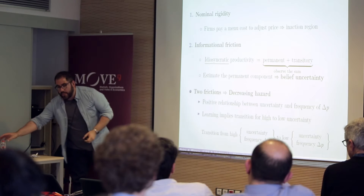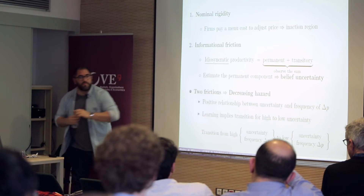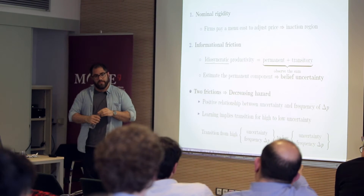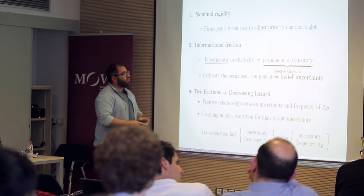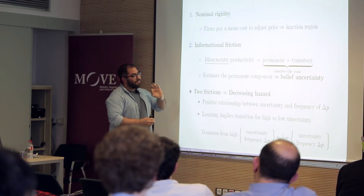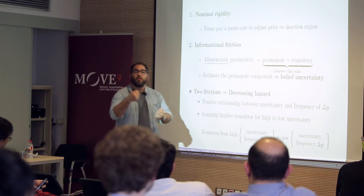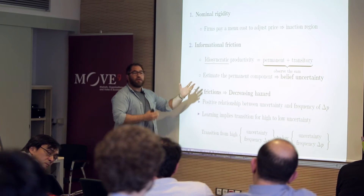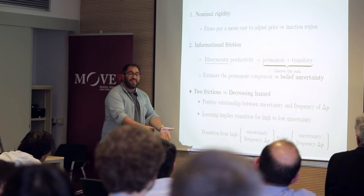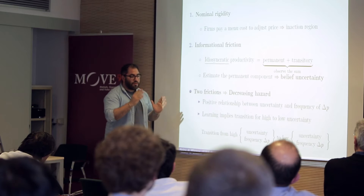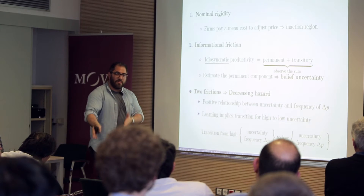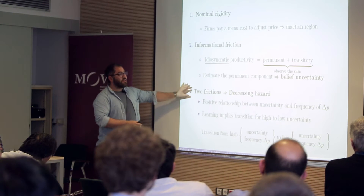A model with demand shocks and uncertainty would give similar results — there's an isomorphism. As you'll see, there are actually quality shocks that affect both productivity and demand, and you could map it into learning about demand. I'm thinking about productivity, but the data I use to match is pricing data, so whatever is happening at the firm level is mapped to the retail level assuming constant markups across.